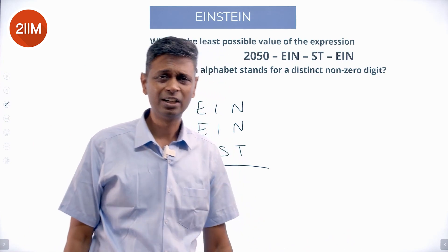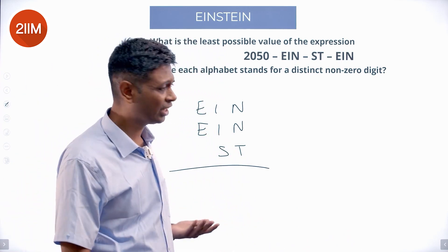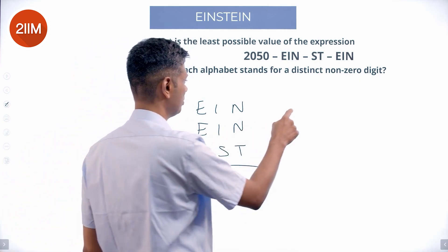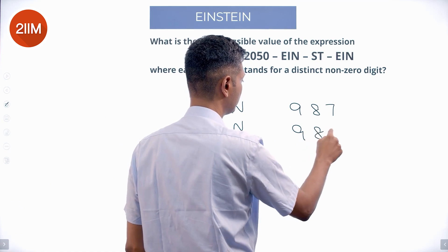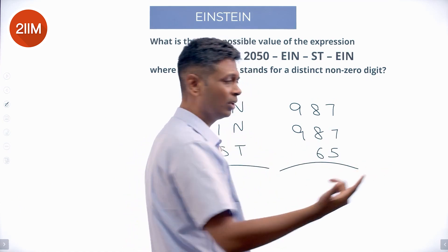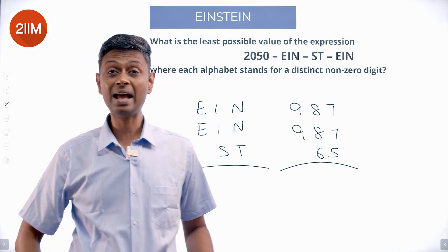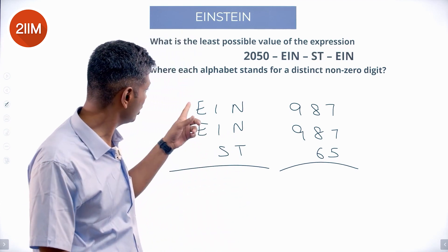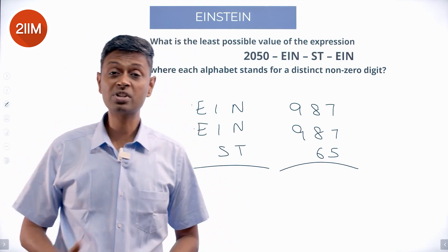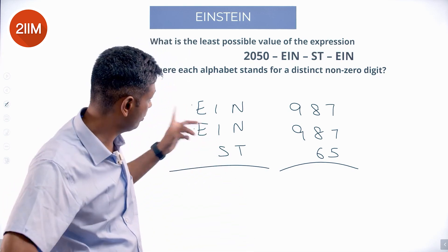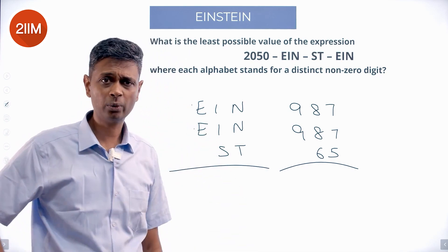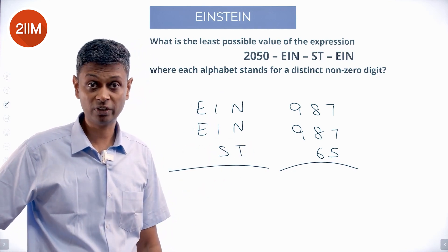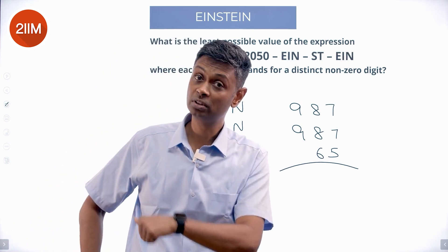Now the question is done. We want this to be as high as possible, so we should put maximum digits: 9, 8, 7, 6, 5. EIN should be 987, nine eight seven. ST should be 65. We're doing this because we want our digits to be as high as possible. Obviously, the hundreds place should be high. I should not put 789, I should put 987. So E should be 9, then immediately best case scenario 8, best case 7, 6, 5.